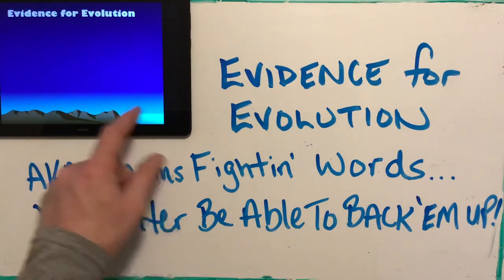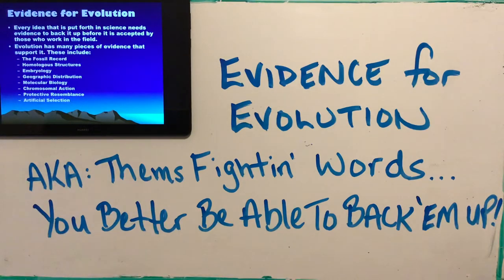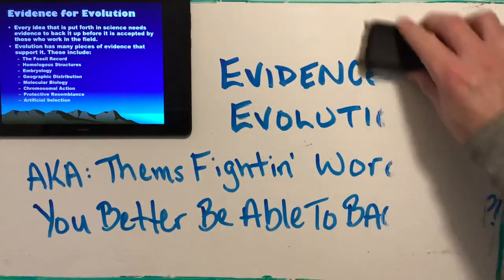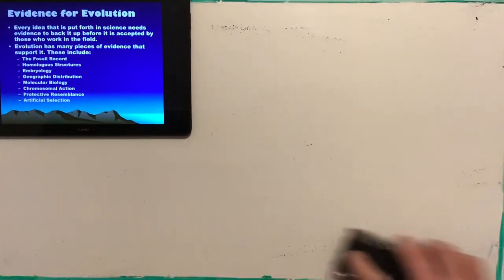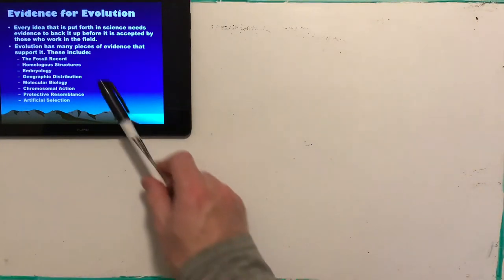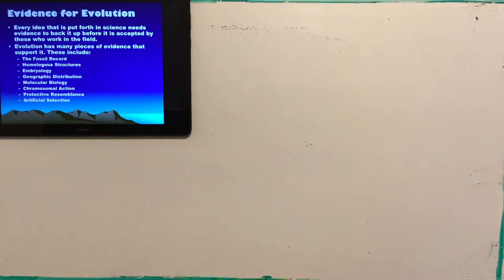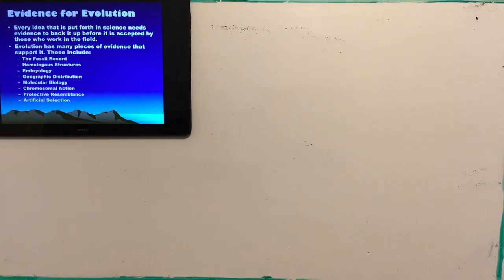There are eight things we're going to talk about in terms of evidence for evolution. There are the big three and then five more supporting ones. The first three - the fossil record, homologous structures, and embryology - were huge for Darwin. Geographic distribution, molecular biology, chromosomal action, protective resemblance, and artificial selection also helped, but those first three were the big three.